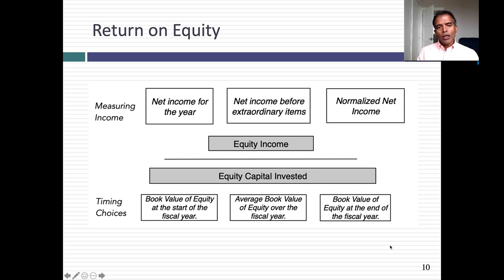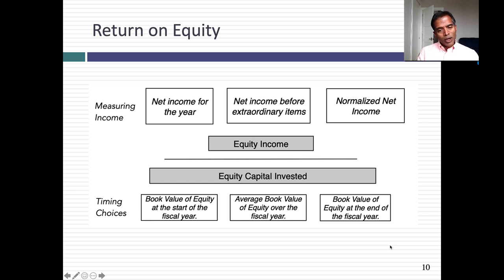For return on equity, the numerator is typically net income. We can debate whether it should be before or after extraordinary items, or an average across the year, but the numerator is always net income. In the denominator, you need a measure of equity invested in the company. Accountants use shareholders' equity from the balance sheet. We can debate whether to use start-of-period, end-of-period, or an average figure, but return on equity almost always has net income in the numerator and equity invested in the denominator.